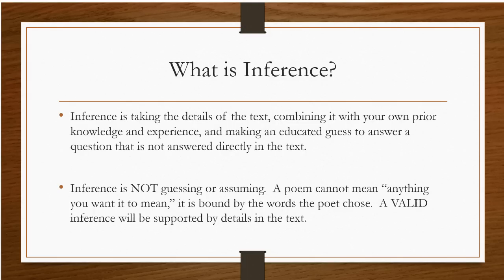I've had students say to me, well, a poem can mean anything you want it to mean. And I've said no, actually that's not true. A poem is bound by the words the poet chose, and those words mean particular things and we can't venture really far away from that. A valid inference will be supported by the details in the text. There's a difference between reading something carefully and making valid inferences, and just reading into it and putting things in the text from your own mind that aren't really in the text. We want to do the first one and avoid the second.